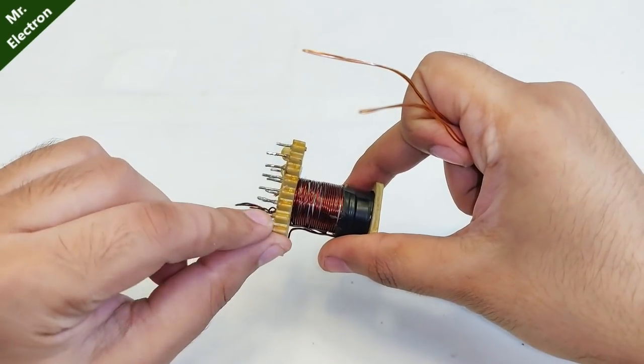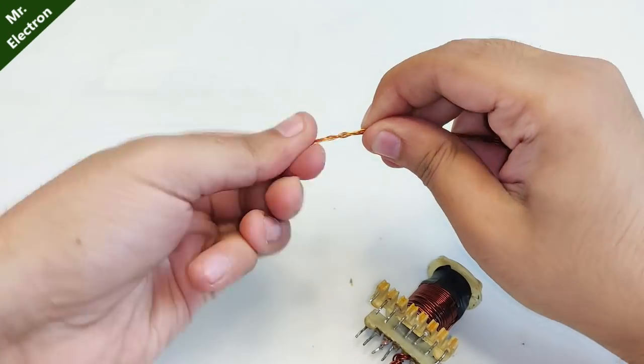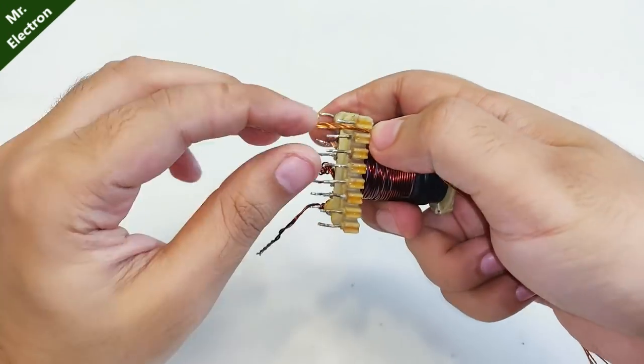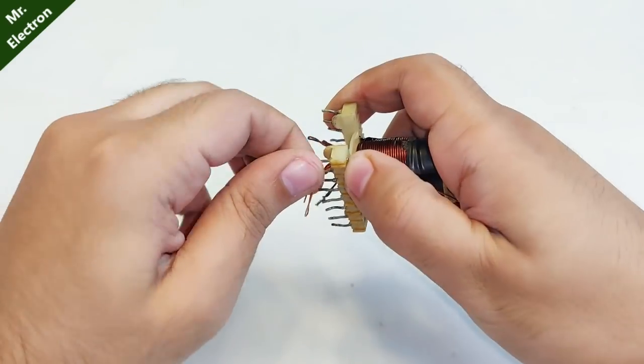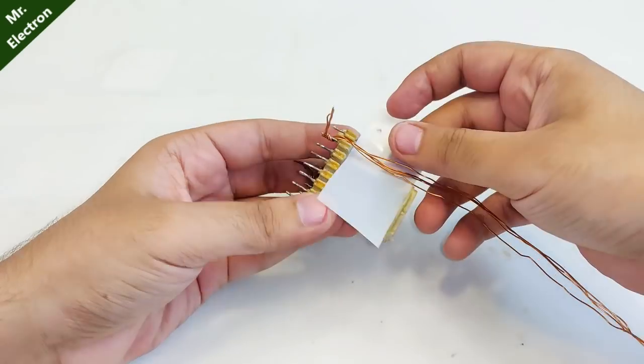Turn these two like this, move it in this groove, and place it like this to make it steady. Now comes the insulation sheet, and now starts our secondary winding.